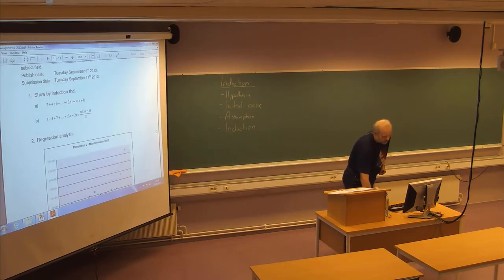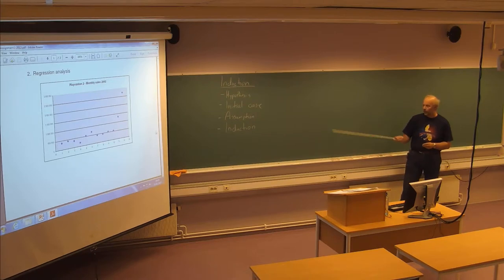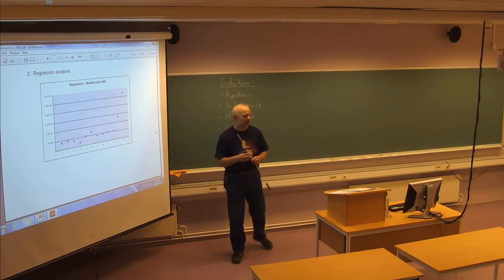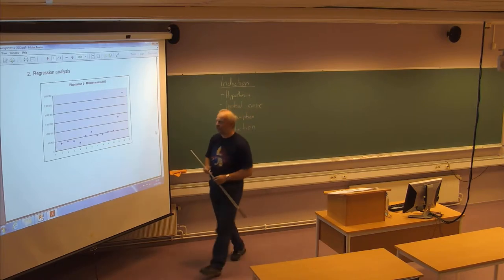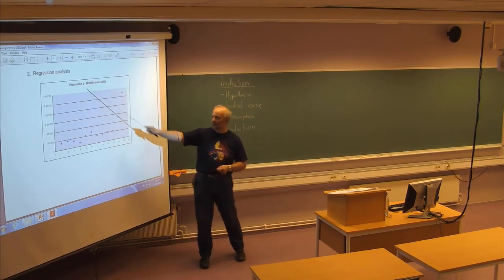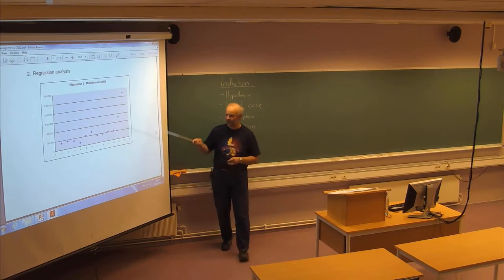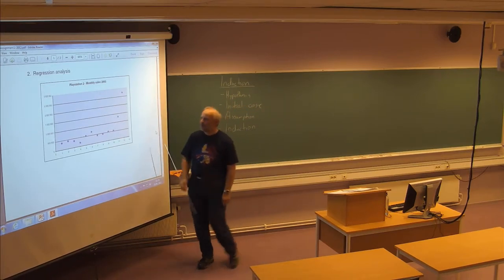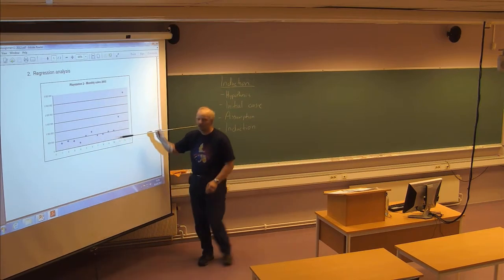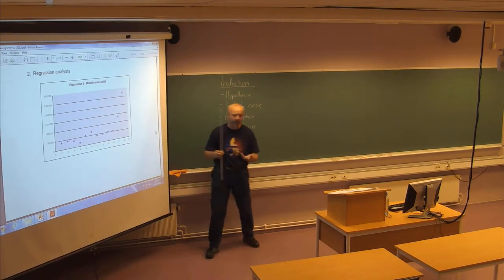Problem number 2 is about regression analysis, which I will present later today. I will first present one more method for stationary series forecasting, and then regression analysis is the method for forecasting when you have a trend. You have 12 data points — the monthly sales in 2002 for the PlayStation 2 game console — and you should use regression analysis to find a trend line describing those 12 months of 2002, then predict sales for 2003, 2004, and 2005.